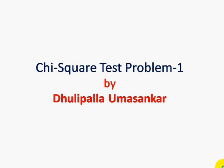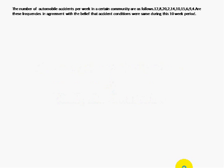Today we are going to discuss a chi-square test problem. The number of automobile accidents per week in a certain community are as follows: 12, 8, 20, 2, 14, 10, 15, 6, 9, 4. Are these frequencies in agreement with the belief that accident conditions were the same during this 10-week period?